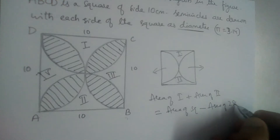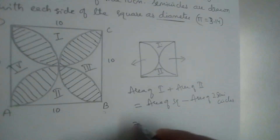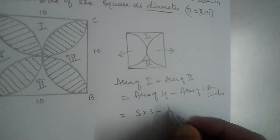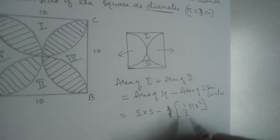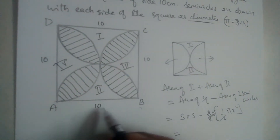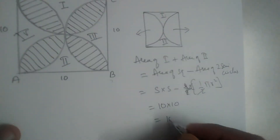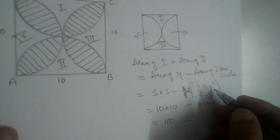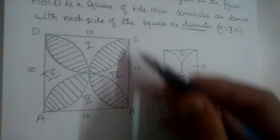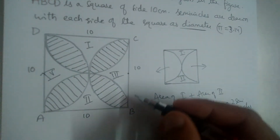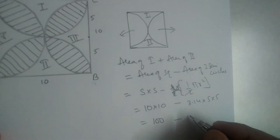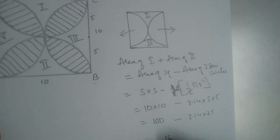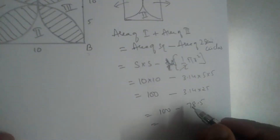Area of square is side × side, and area of a semicircle is half × π × r². For 2 semicircles, the 2s cancel. Side is 10, so area of square is 100. Taking π as 3.14, and since the diameter is 10, the radius is 5. So we get 100 minus 3.14 × 25, which is 100 minus 78.5.